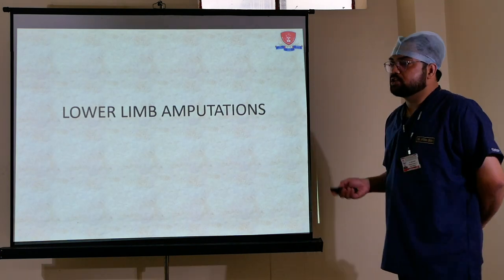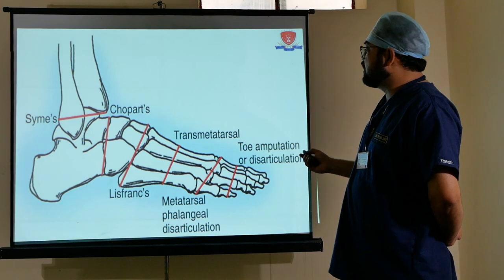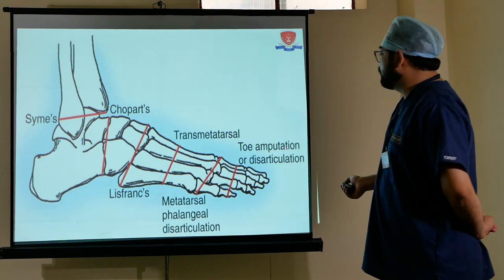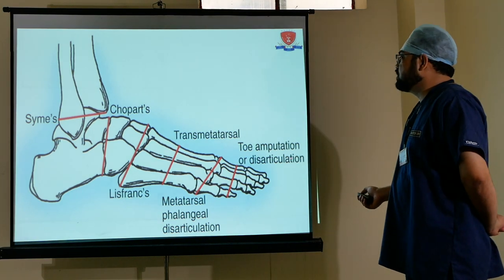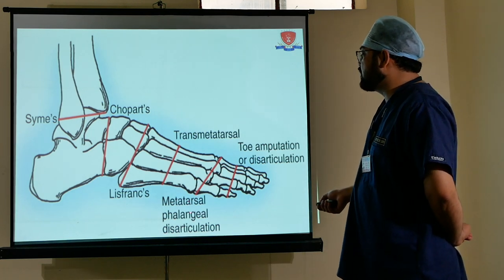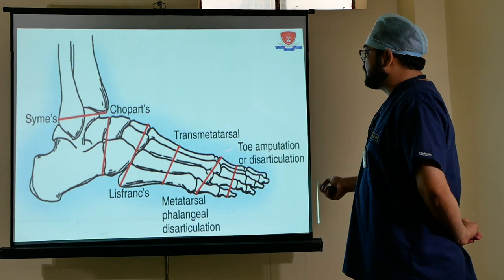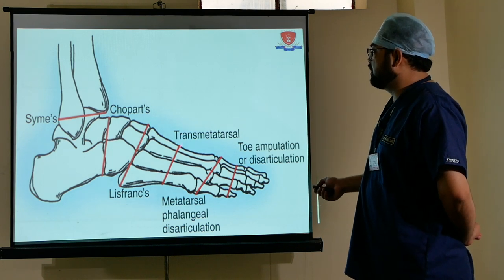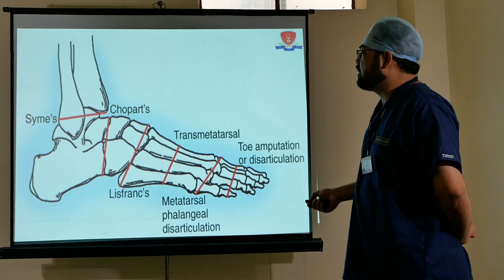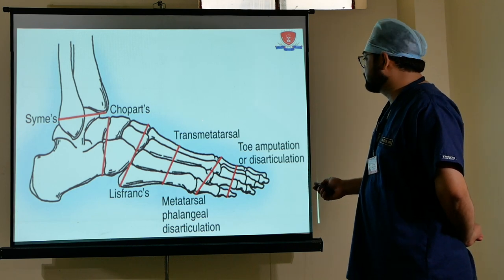Lower limb amputation levels: toe amputation or disarticulation, metatarsophalangeal disarticulation, transmetatarsal amputation, Lisfranc disarticulation, Chopart's, and Syme's amputation.